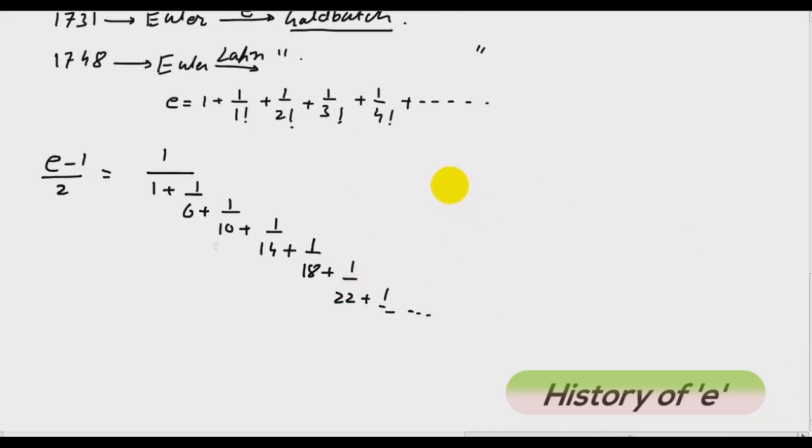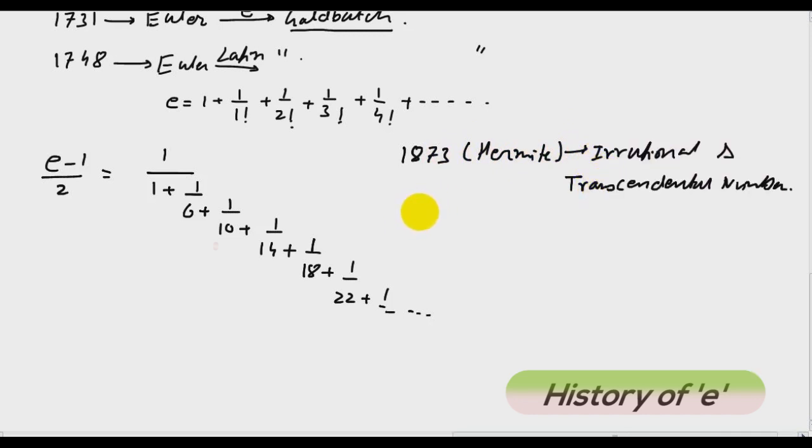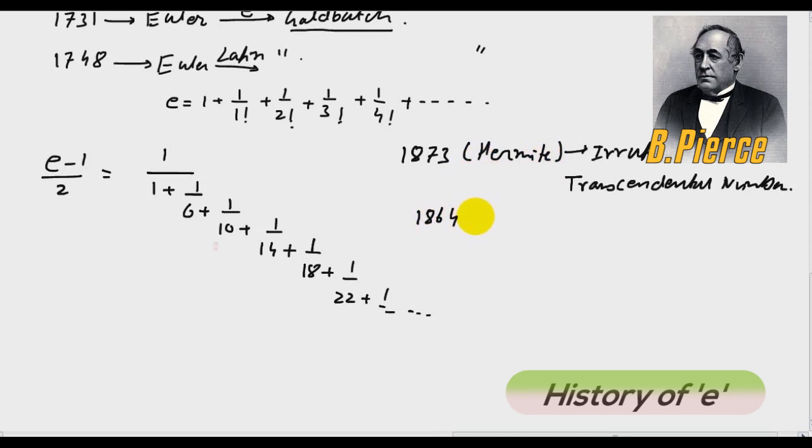It happened in year 1873 when Hermite proved that e is an irrational and transcendental number. And in 1864 Benjamin Pierce proved the golden equation e to the power iota pi plus 1 equal to 0, having all the 5 constants which I discussed in the start of the video: 0, 1, e, iota and pi. A golden equation. And Benjamin Pierce is also known as the father of pure mathematics.